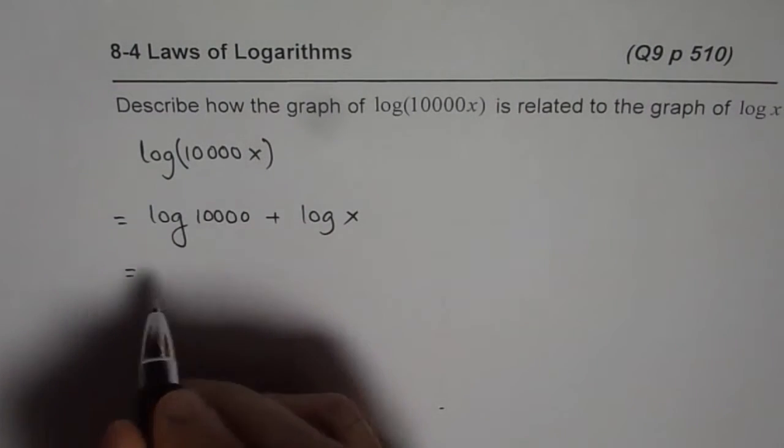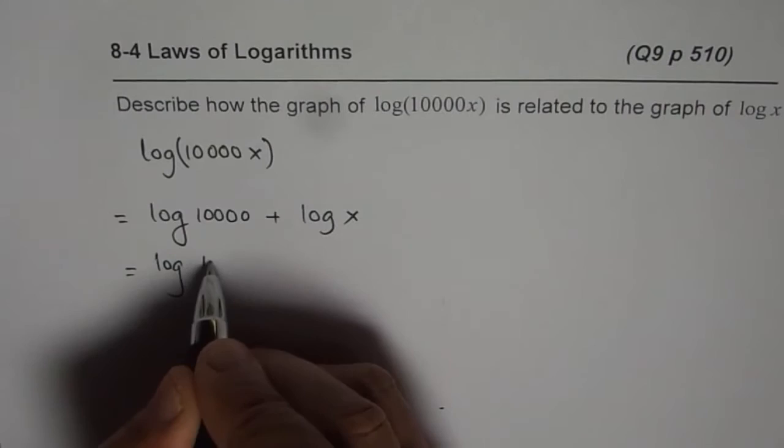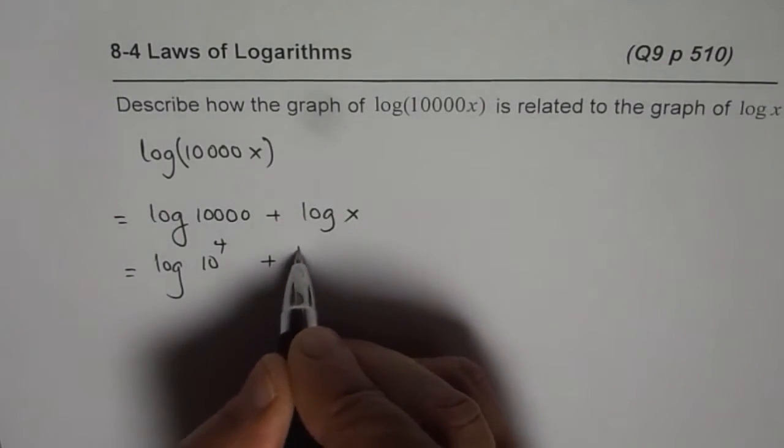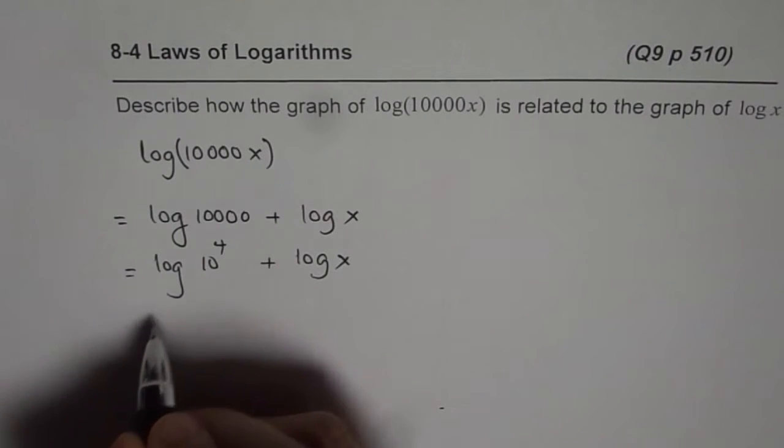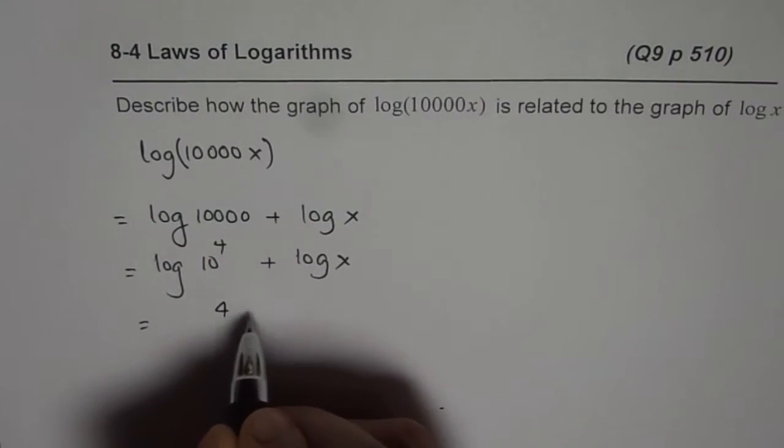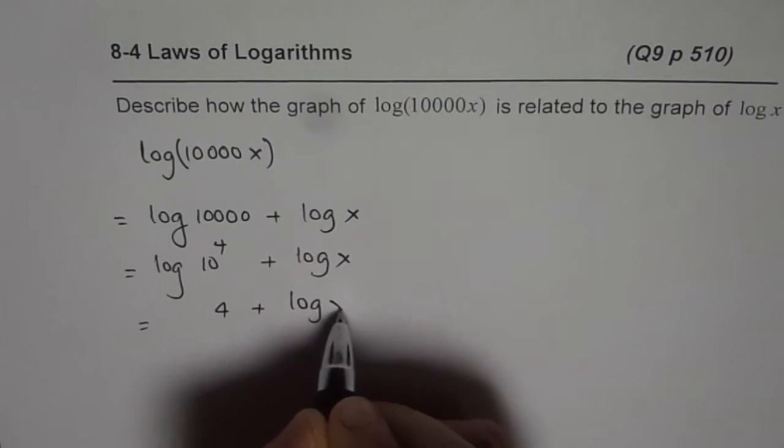Now, when you write 10,000, you could actually write this as 10 to the power of 4. When there is no base, it means that the base is 10. Therefore, this is actually 4 plus log(x).